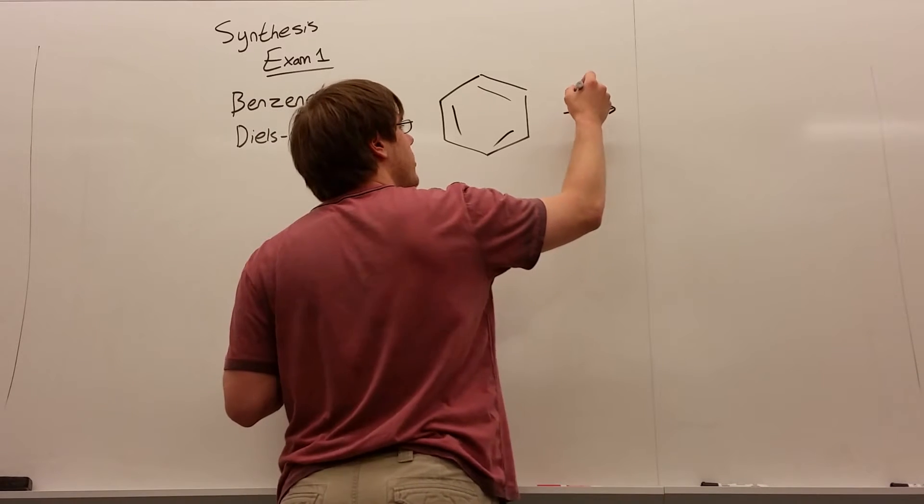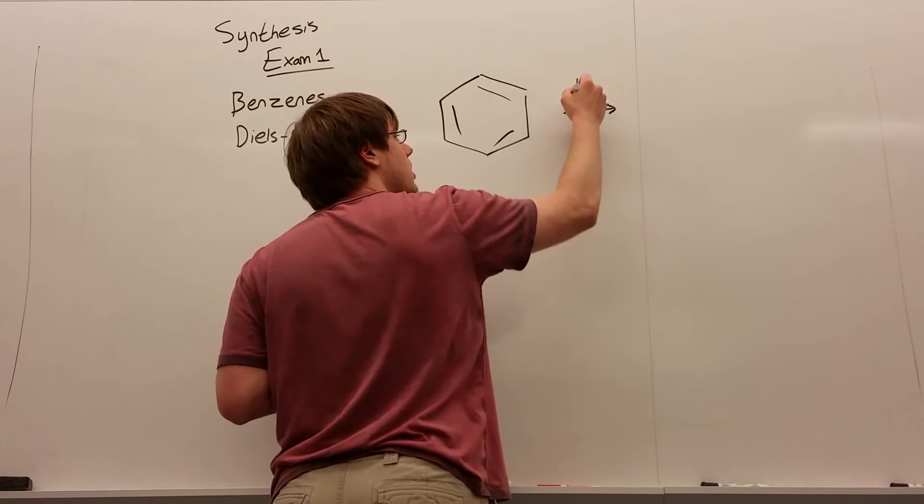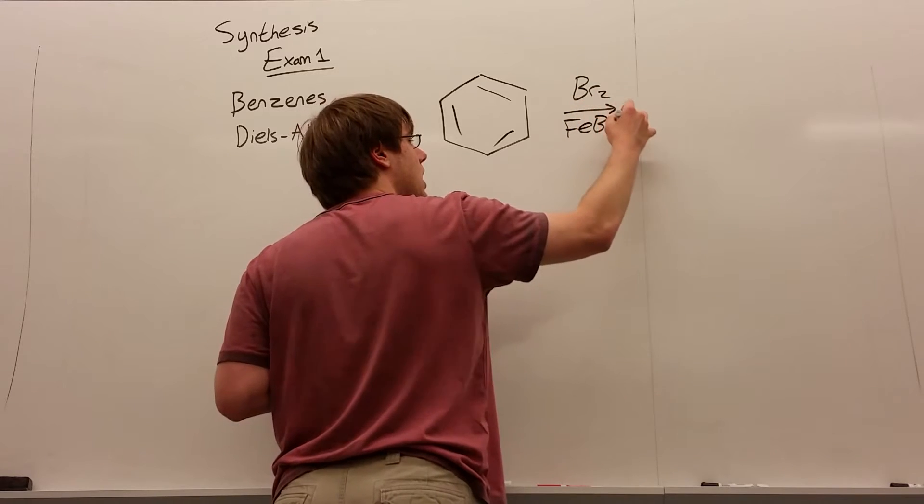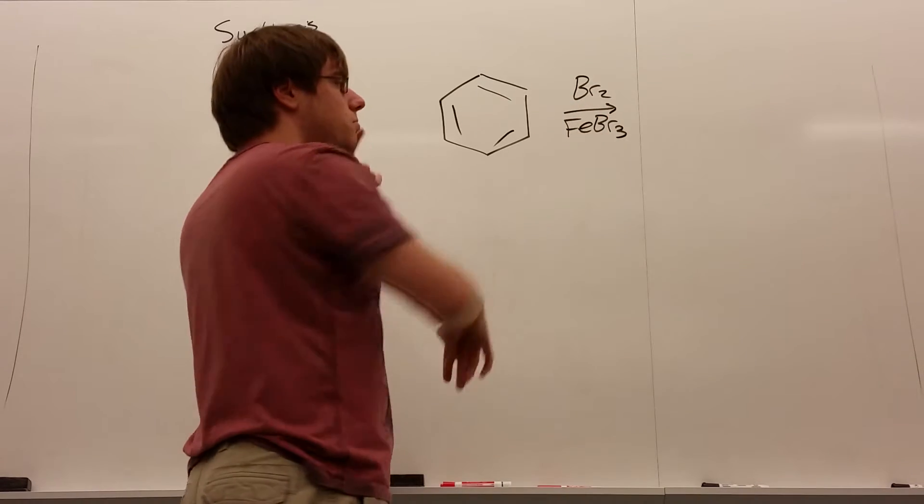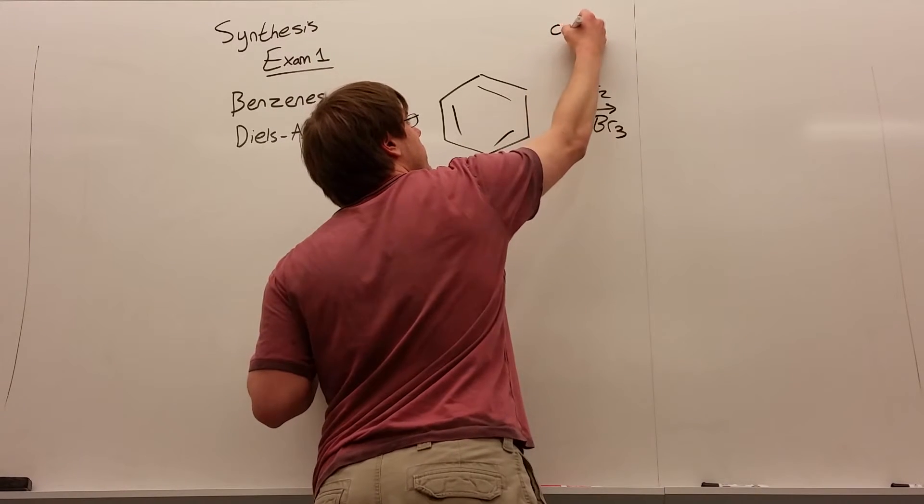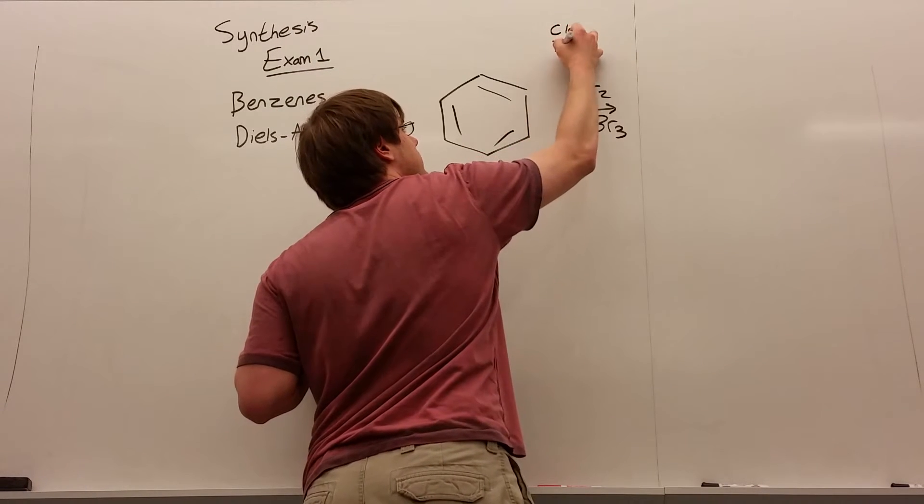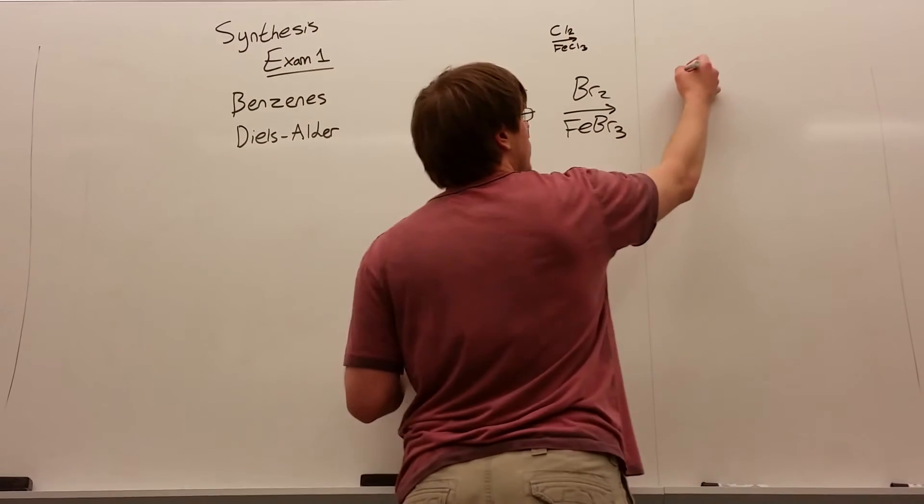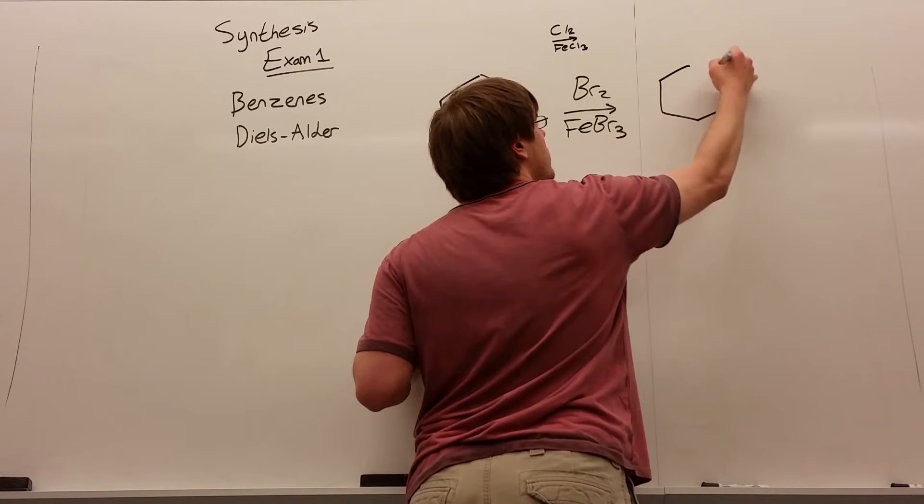So we have a bunch of different reactions that add things to benzene. Let's see what we have. Well, we have Br2 with FeBr3, and the bromine is replaceable with any other halogen. For example, I could do Cl2 with FeCl3, and all this does is it adds a bromine, or whatever halogen is on the arrow, to your benzene.